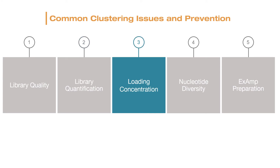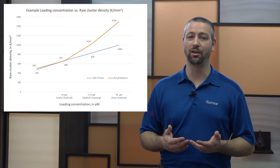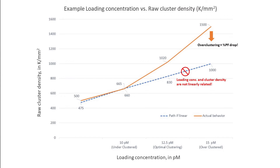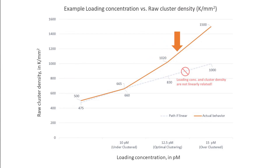Now let's examine common issues loading concentration can cause. The loading concentration is the final concentration of a library loaded onto an instrument for sequencing. Recommended loading concentrations can be found in the denature and dilute guide or the system guide. It's important to adjust loading concentrations in small increments, because the relationship between loading concentration and cluster density is non-linear, as seen in this chart of example data for the MiSeq V2 chemistry. Assuming a linear relationship when adjusting loading concentration can lead to over-clustering and a drop in percent clusters passing filter. Achieving optimal cluster density likely requires a small empirical adjustment to determine optimum loading concentration.